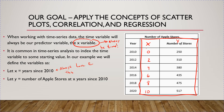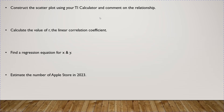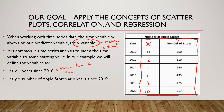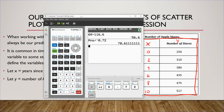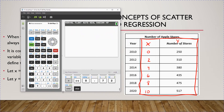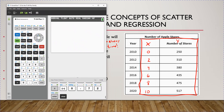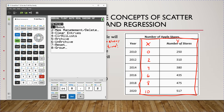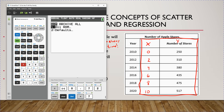Now you're going to need your graphing calculator. The first thing we're going to do is construct the scatter plot using your TI calculator and comment on the relationship. To reset the calculator, go to second function, memory, then option number seven, then option number one, then option number two.